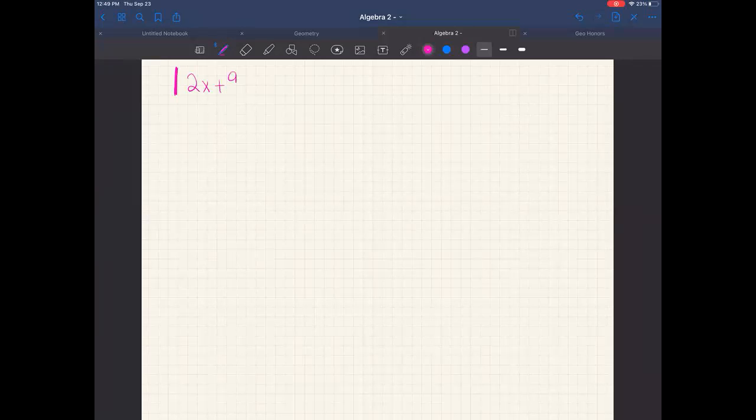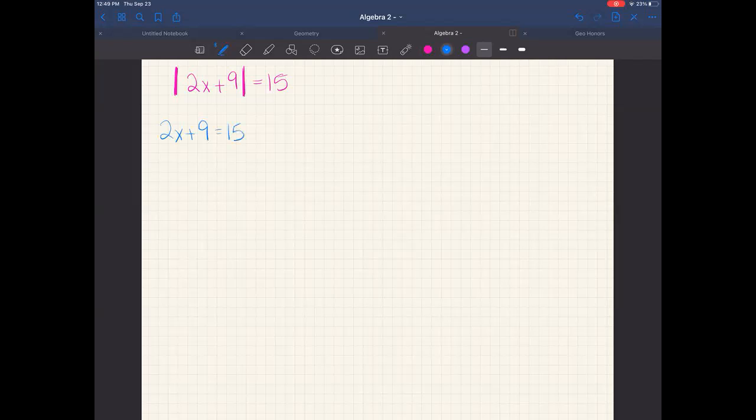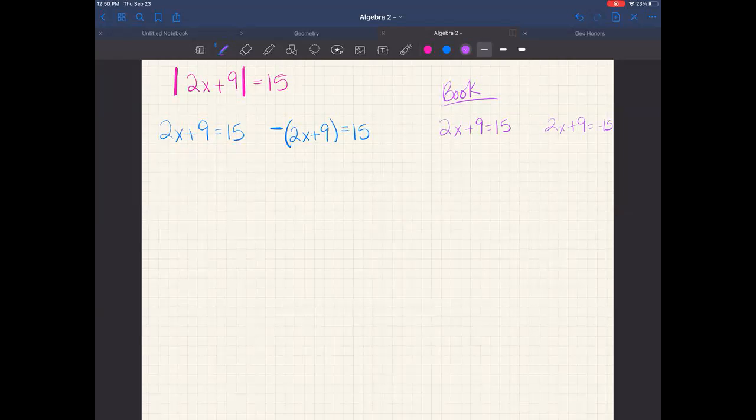This first one is 2x plus 9 equals 15. Luckily, I don't have to move anything around. All I have to do is just get right to solving it. So remember, there's my way: 2x plus 9 equals 15, negative 2x plus 9 equals 15. And then the book's way. Someone in first period today told me the book way is easier for me to do. If that's true for you, use the book way. My way I know because I've done it for years. But you guys are still able to pick the route that you like.